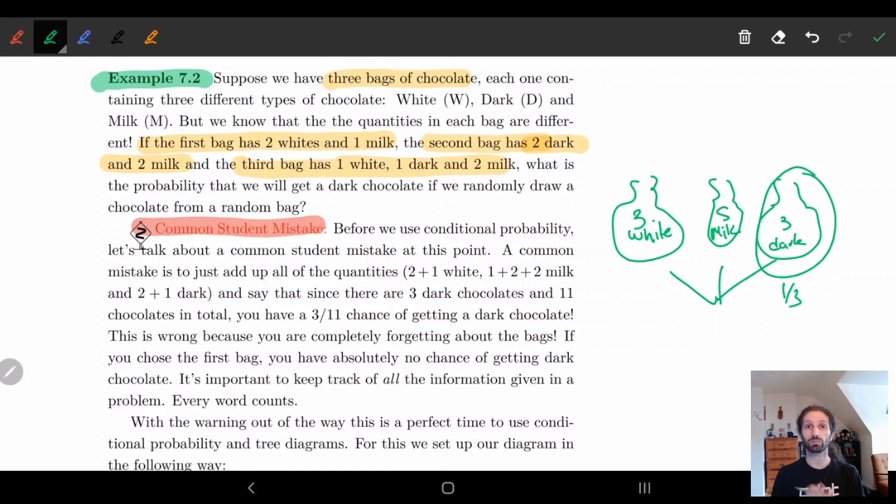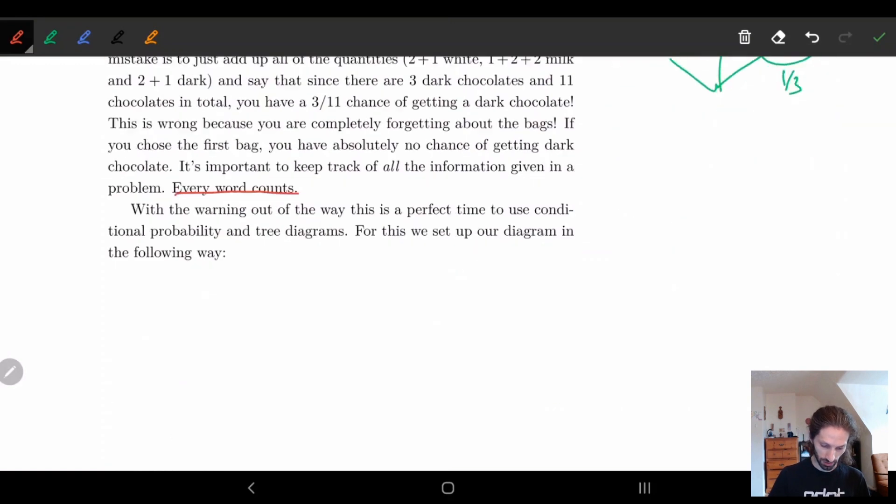So automatically, just by looking at the problem differently, we know that this way of thinking about it is very different. This is why I keep trying to emphasize that every word counts. If I'm mentioning that there are three bags and they're separated in different ways, you probably need to use that information in some way. So what we're going to do is take this problem and look at what's called the tree diagram.